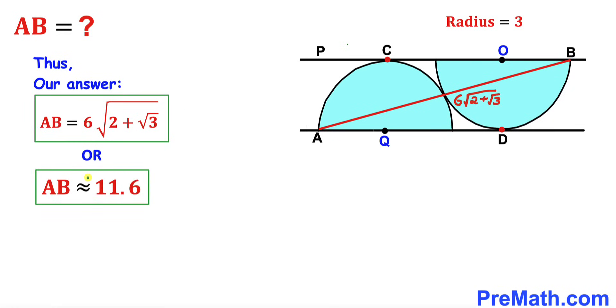Therefore AB is equal to approximately 11.6 units. Thanks for watching, and please don't forget to subscribe to my channel for more exciting videos. Bye!